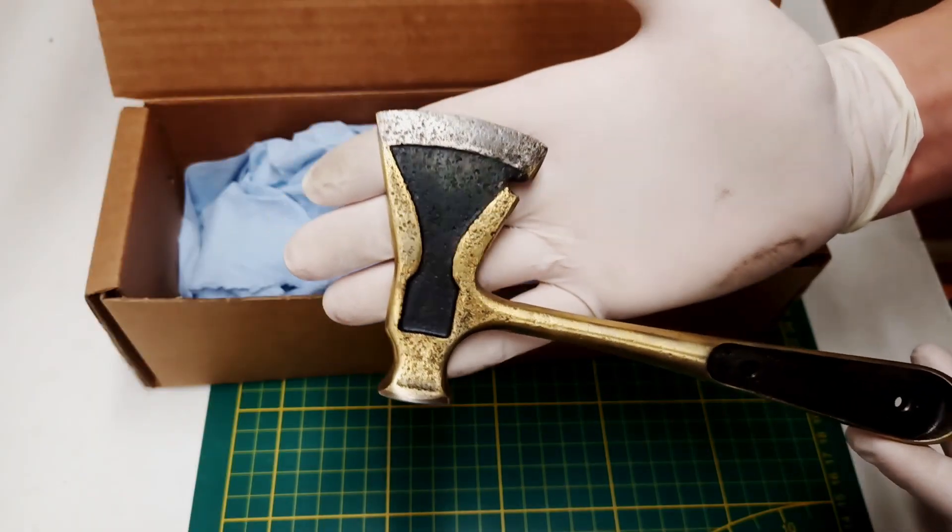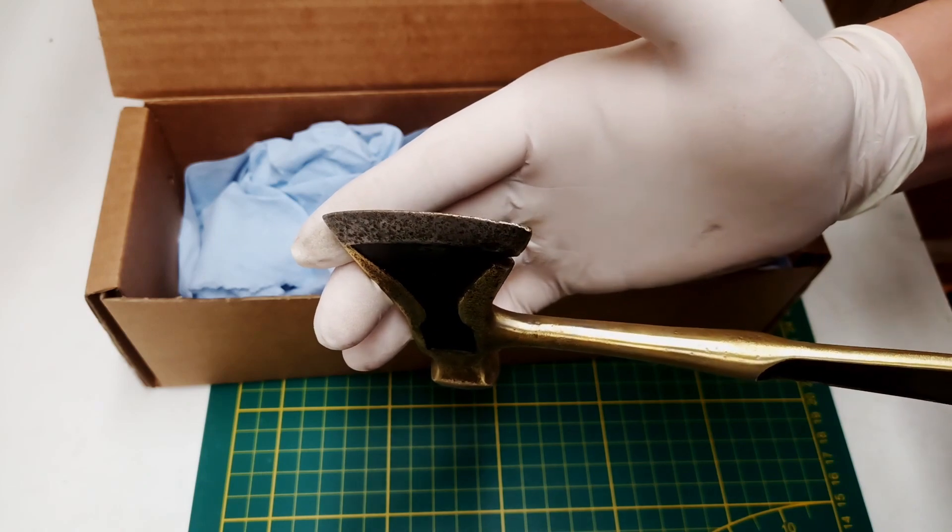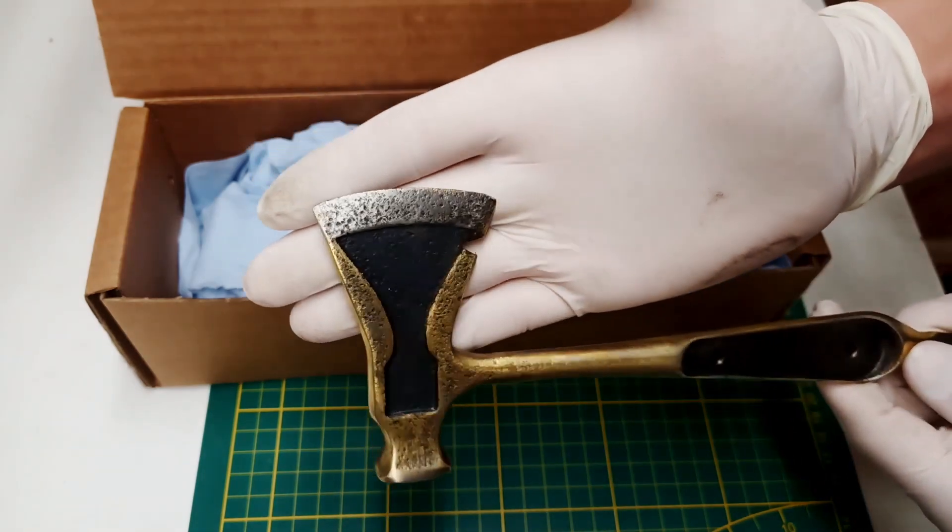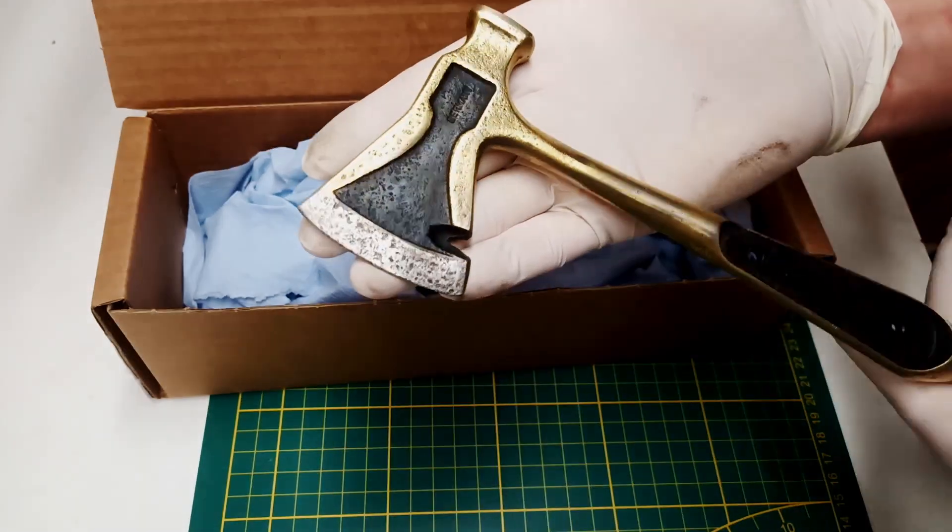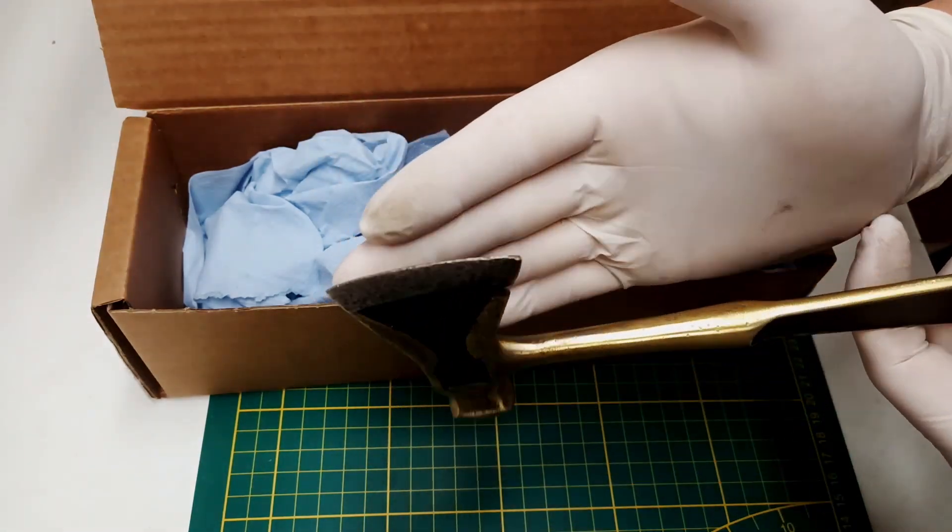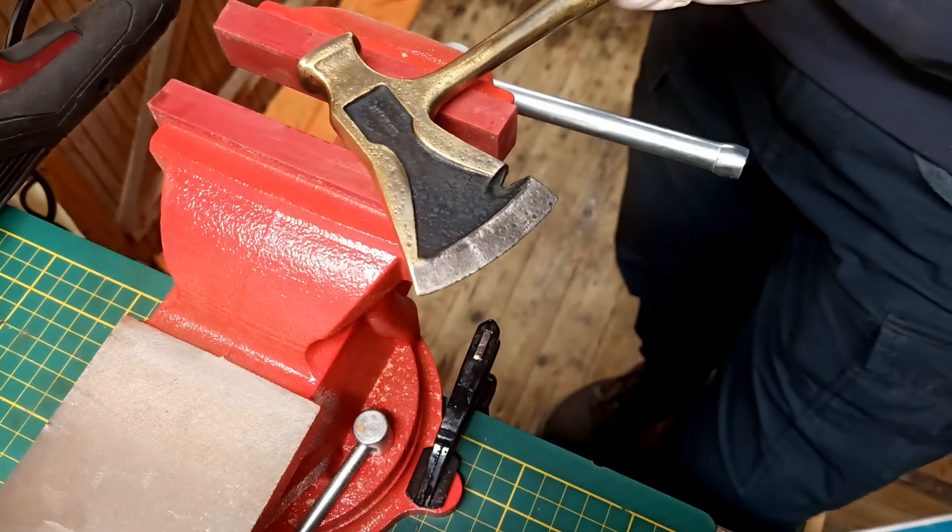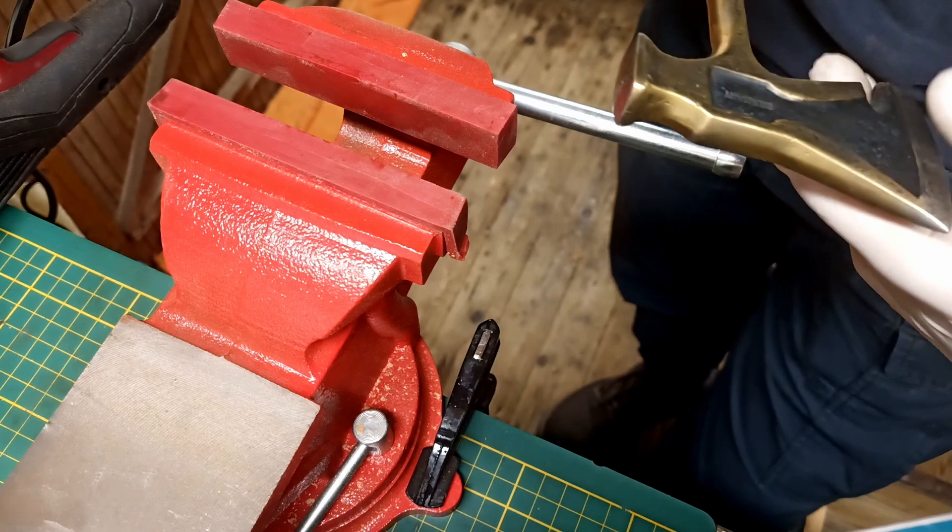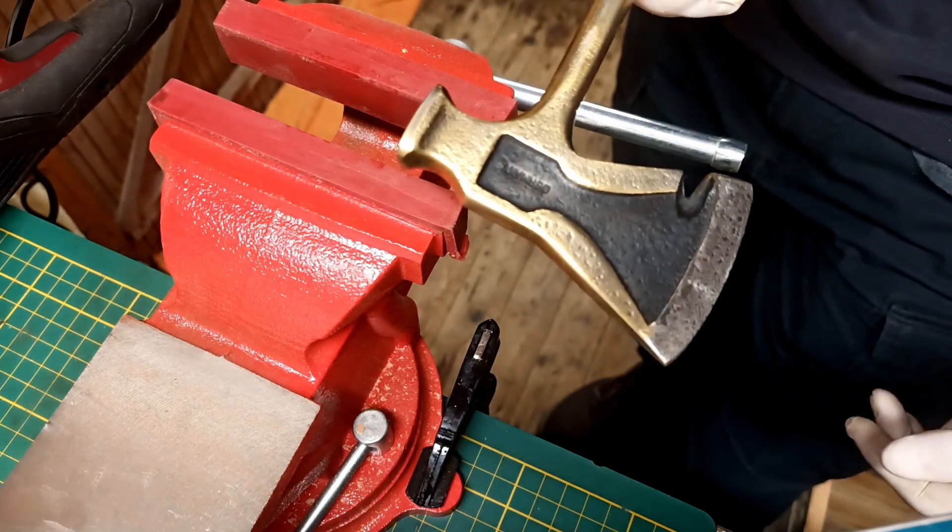Our job will be to get this axe in a usable state again, which means we're gonna have to sharpen it. At first that might seem like a quick and easy done job, but if you take a closer look at the edge, you will see that this edge is actually in a pretty horrible state, which for us means we will have to do a lot of stock removal. The first step on our journey will actually be to remove all the pitting, and after that we can take care of creating a nice apex and getting this back to sharp. For removing all the deep spots and all the pitting, I will clamp it down in this vise and I will use these rubber inlays so I don't damage the already pretty good looking axe.